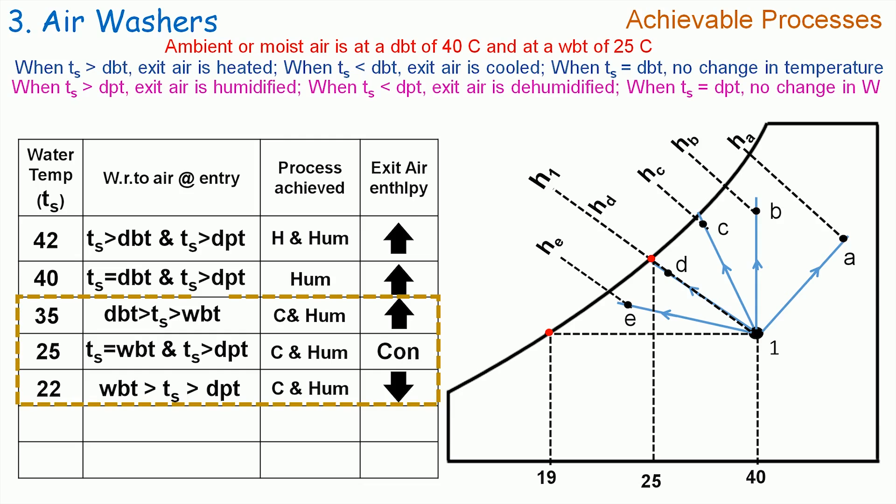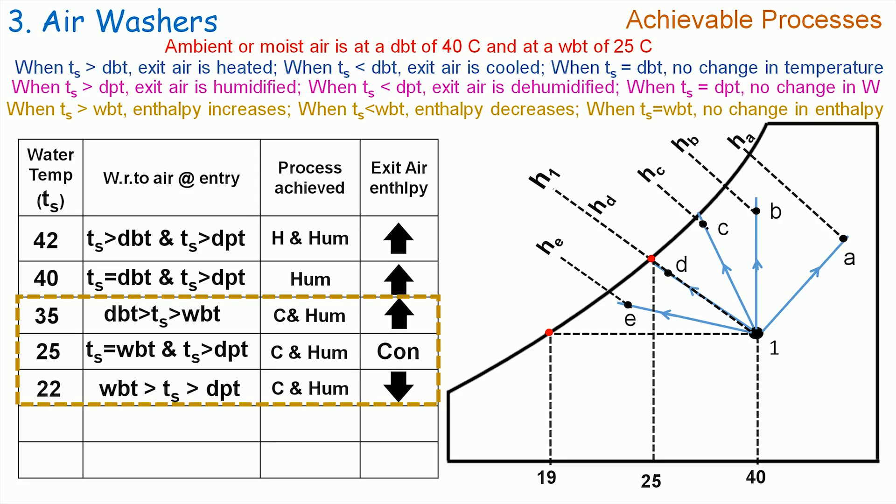Let me explain an interesting perspective here. In these three cases, the air is undergoing cooling and humidification process only. But the enthalpy of the exit air is increasing for the first one, remaining constant for the second, and decreasing for the third case. This is due to the relationship between the spray water temperature and the WBT of the moisture. Whenever TS is greater than WBT, then exit air enthalpy is increased. Whenever TS is less than WBT, then exit air enthalpy is decreased. And whenever TS is equal to WBT, then there is no change in moisture enthalpy.